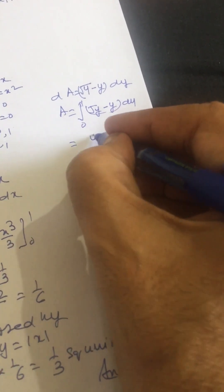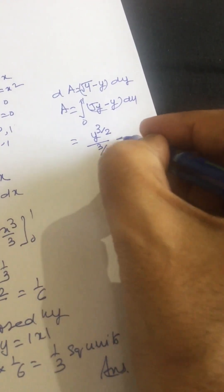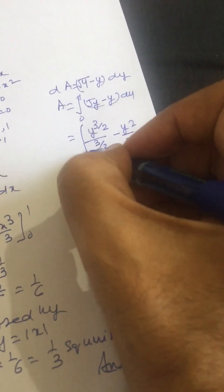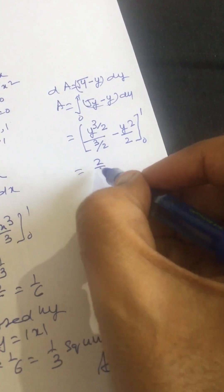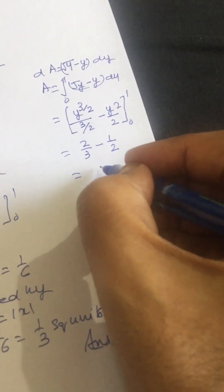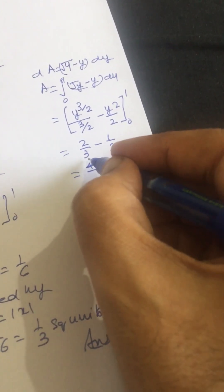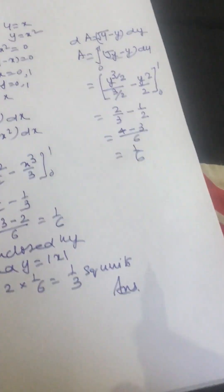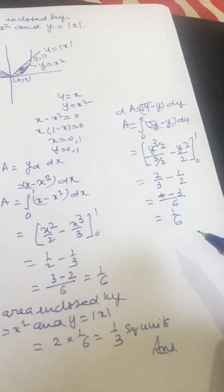Evaluating the integral: y raised to the power 1 over 2 integrates to y raised to the power 3 over 2 divided by 3 over 2, which is 2 over 3, minus y squared over 2. This gives 4 minus 3 over 6, which becomes 1 over 6. So either way we can calculate this area and we are getting 1 over 6 from both methods.